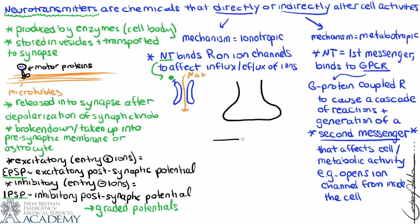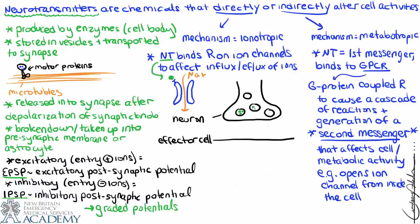Let's draw a picture to make sense of it. Here we have a neuron synapsing on an effector cell, with vesicles containing neurotransmitters. When we say first messenger, it's the first domino in a domino effect — the first thing needed to interact with and have the desired effect in the next cell. G proteins are a family of proteins associated with the membrane and with second messenger activity.